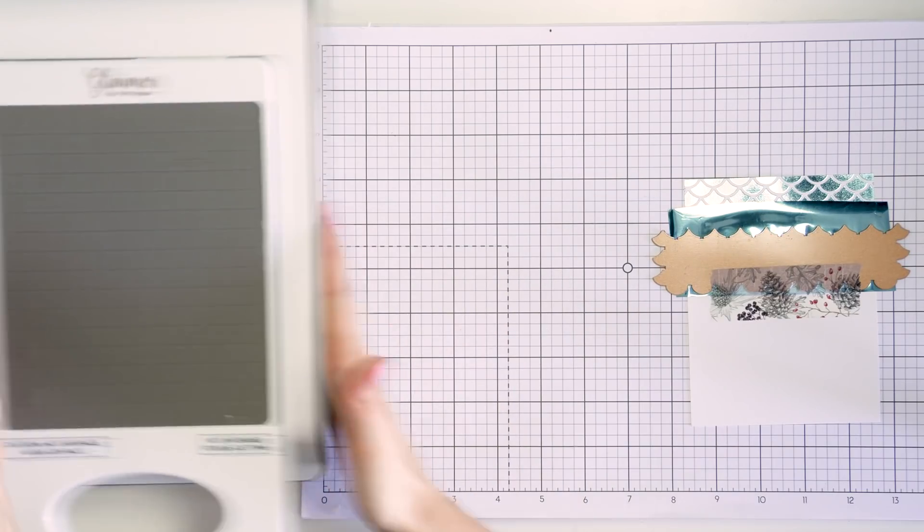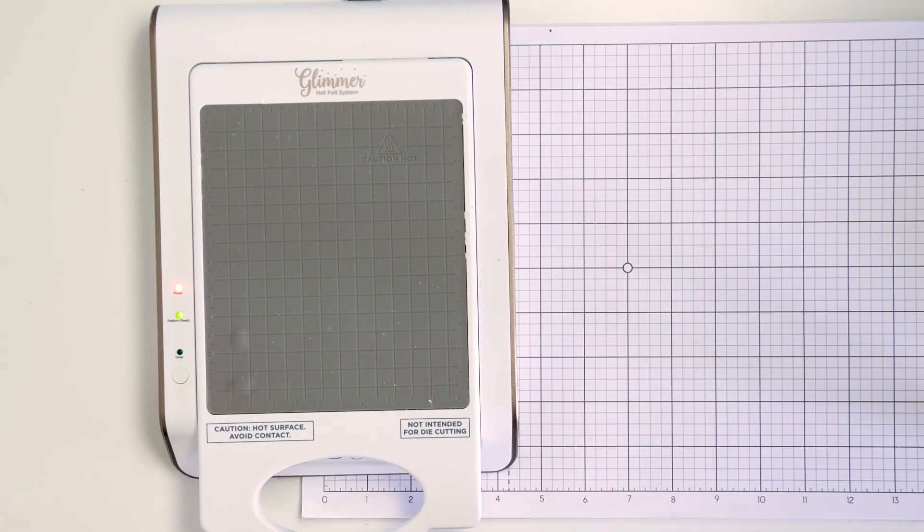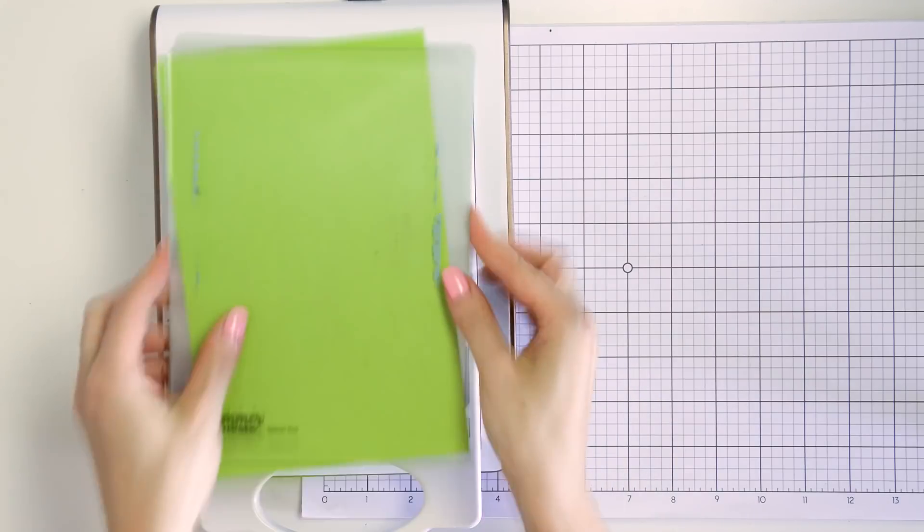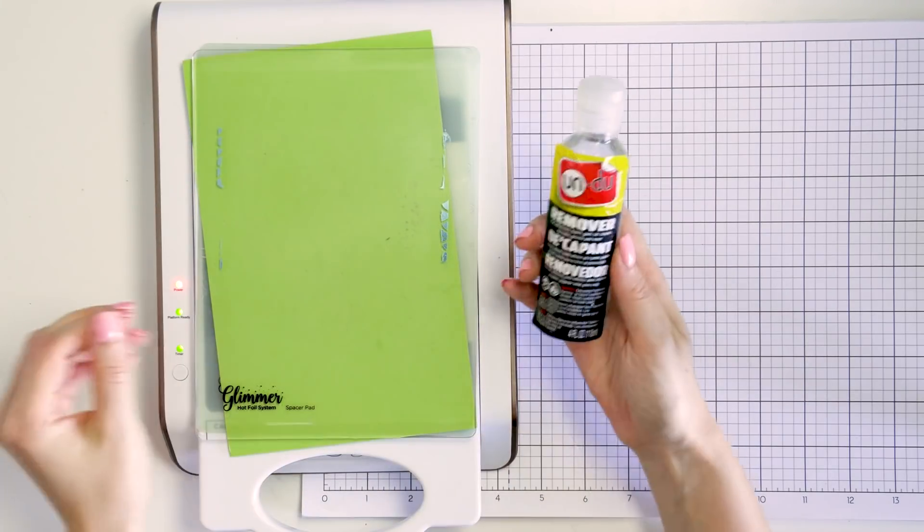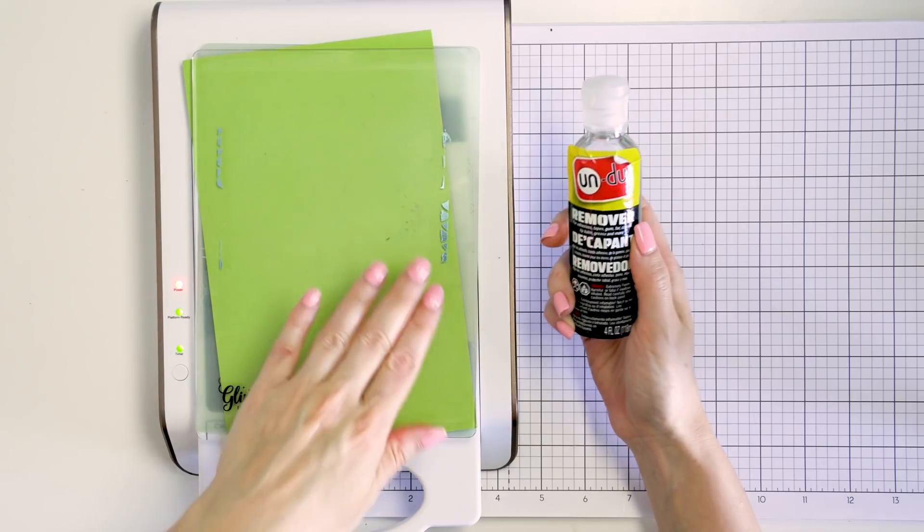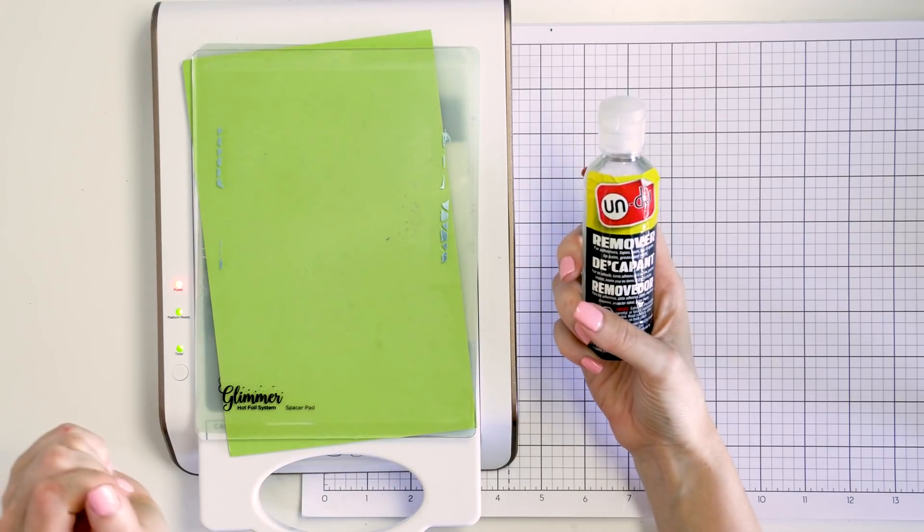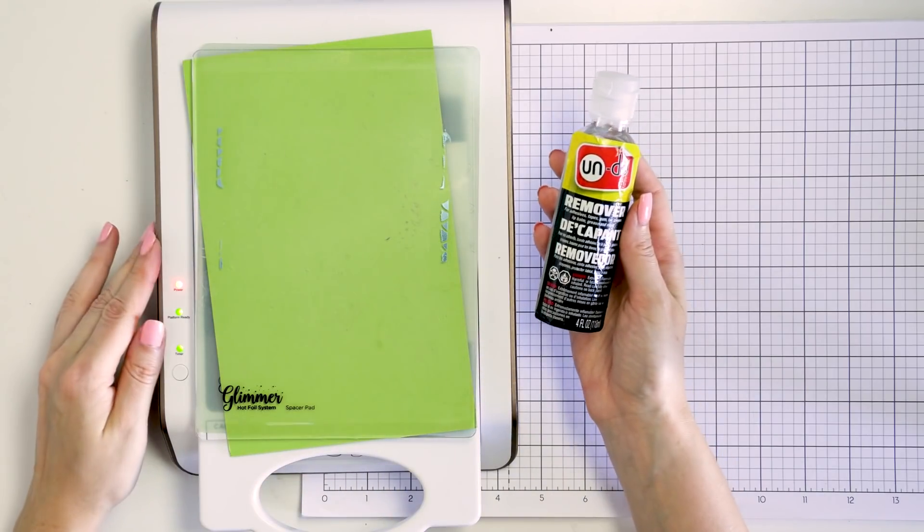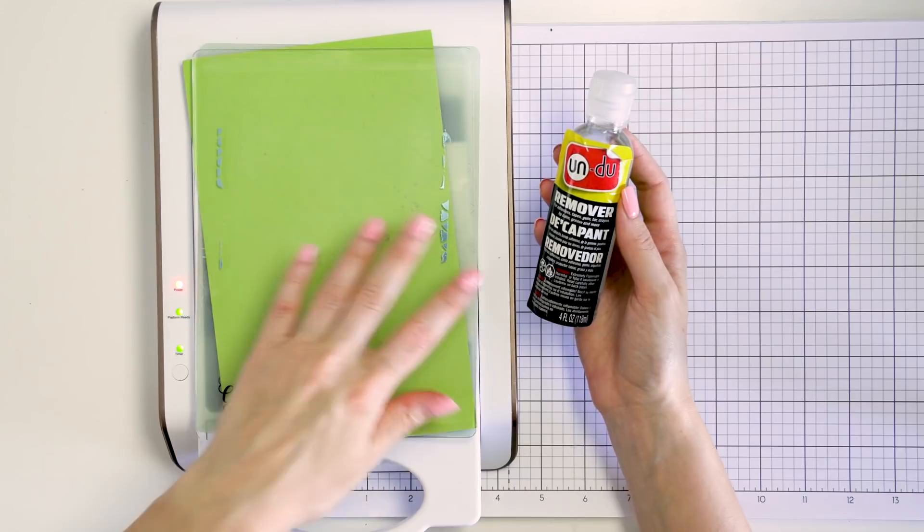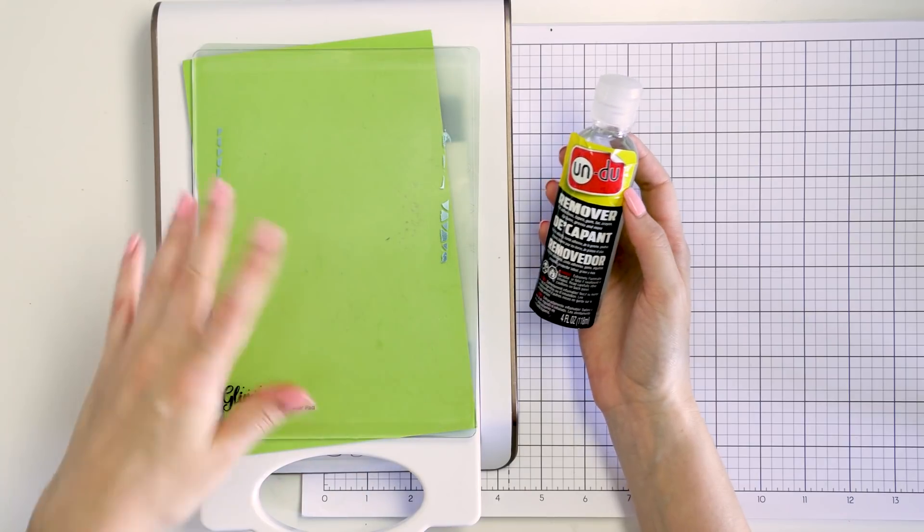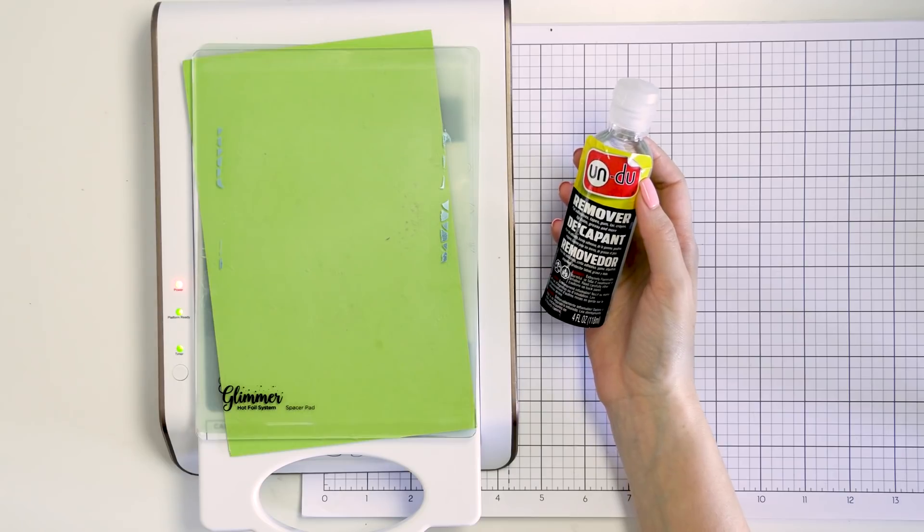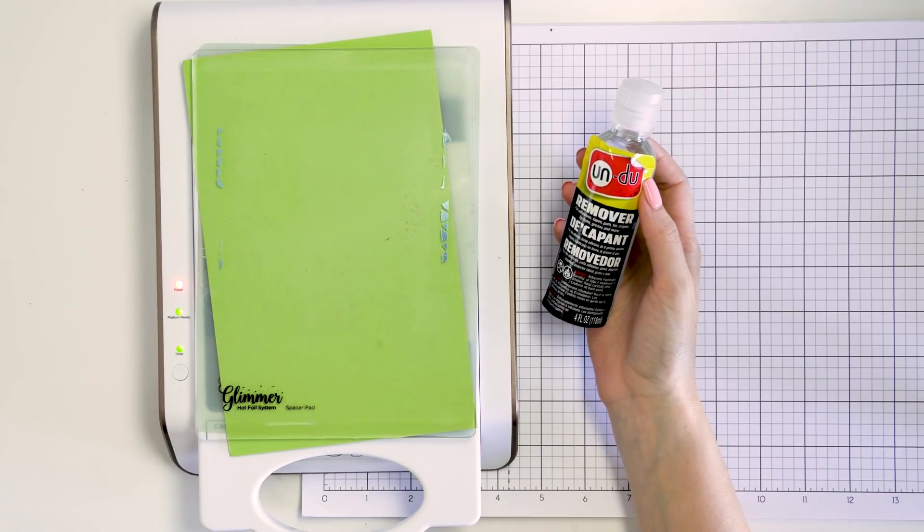While the plate is heating up, I wanted to chat a bit about cleaning your plates. Once I'm done foiling this I'm going to use my undo to clean up the plates from the excess foiling. Any sticker remover will be good for the job. One tip I will give you, do not use any sharp objects to scrape the foil off as that might scratch the plates and therefore that will leave scratch marks on your foiled projects.